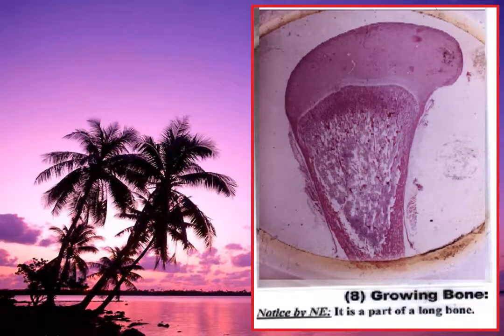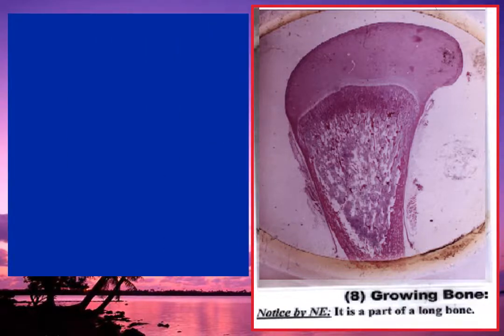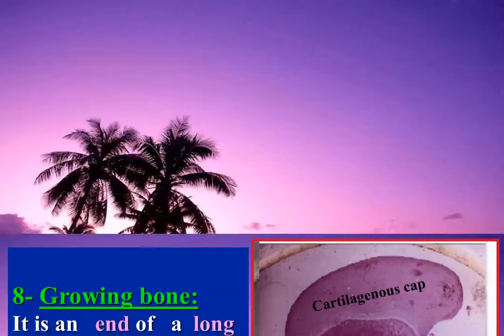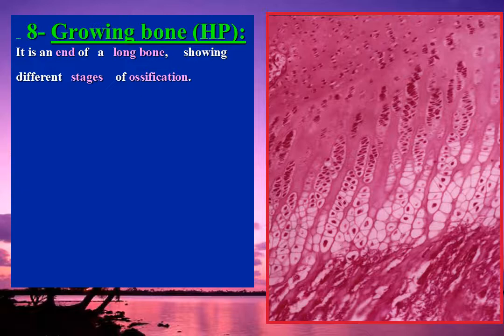A longitudinal section of decalcified compact bone showing a growing bone — specifically the upper end of a long bone — shows the different stages of ossification. It has an upper blue cartilaginous cap and lower red bony bars. At high power, it shows the end of a long bone with different stages of ossification occurring in the epiphyseal plate between the epiphysis and diaphysis.